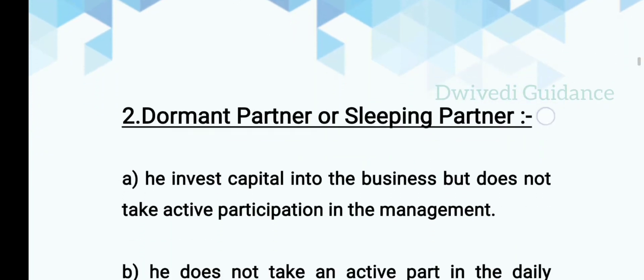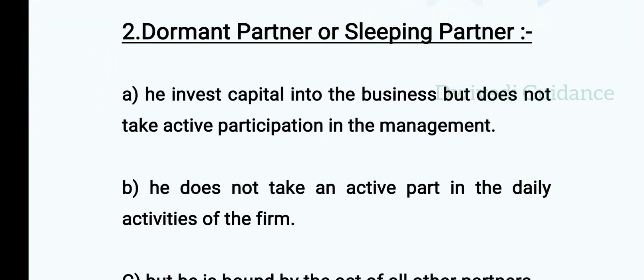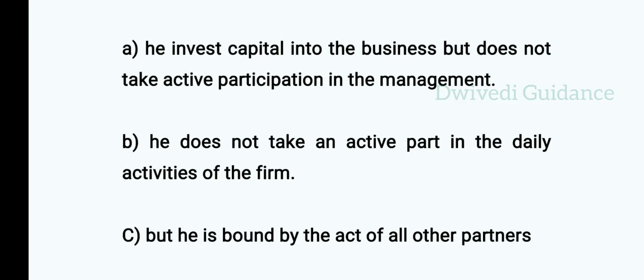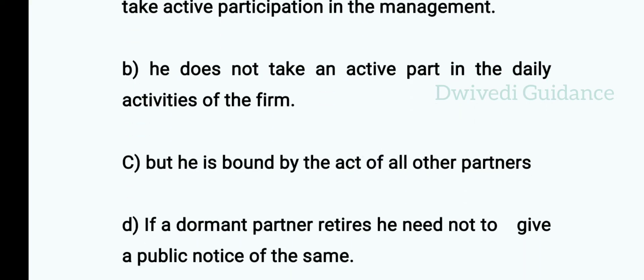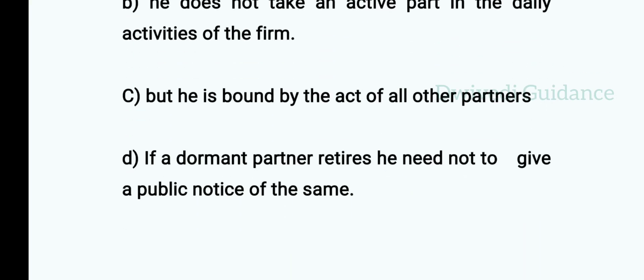Next, we'll see the dormant partner or sleeping partner. He invests capital into the business but does not take active participation in the management. He does not take active part in the daily activities of the firm, but he is bound by the acts of all other partners. If a dormant partner retires, he does not need to give a public notice. They just invest money in the business and leave everything to the other partners, but they do share in the profit.